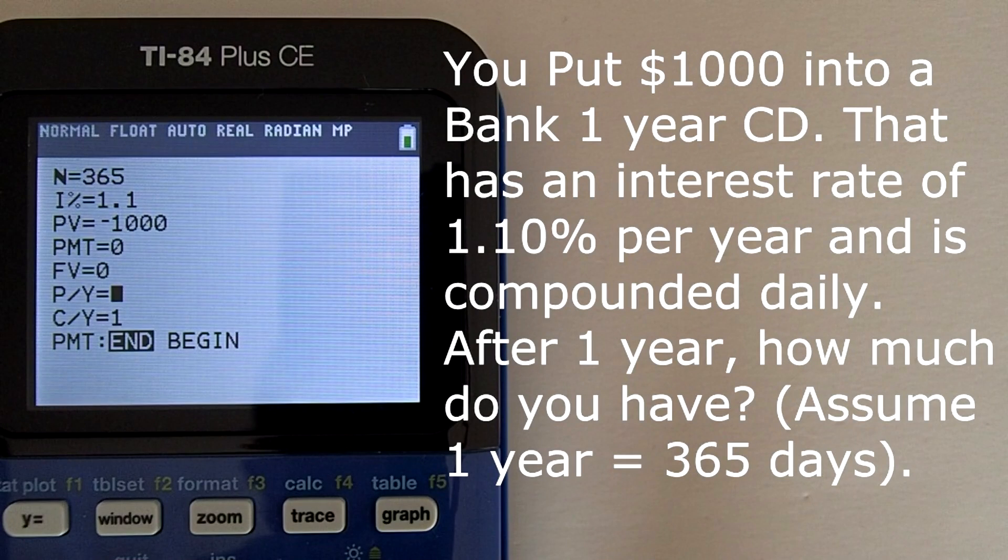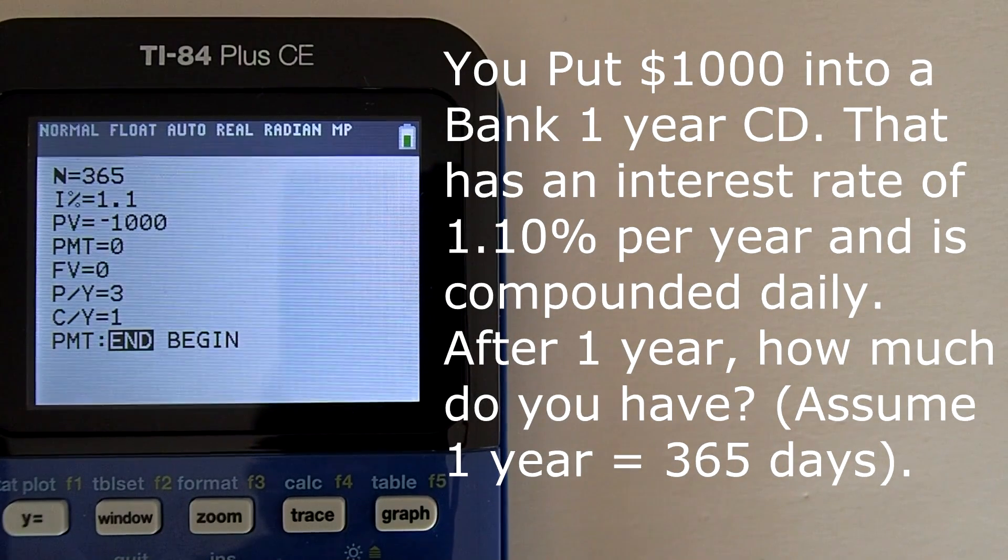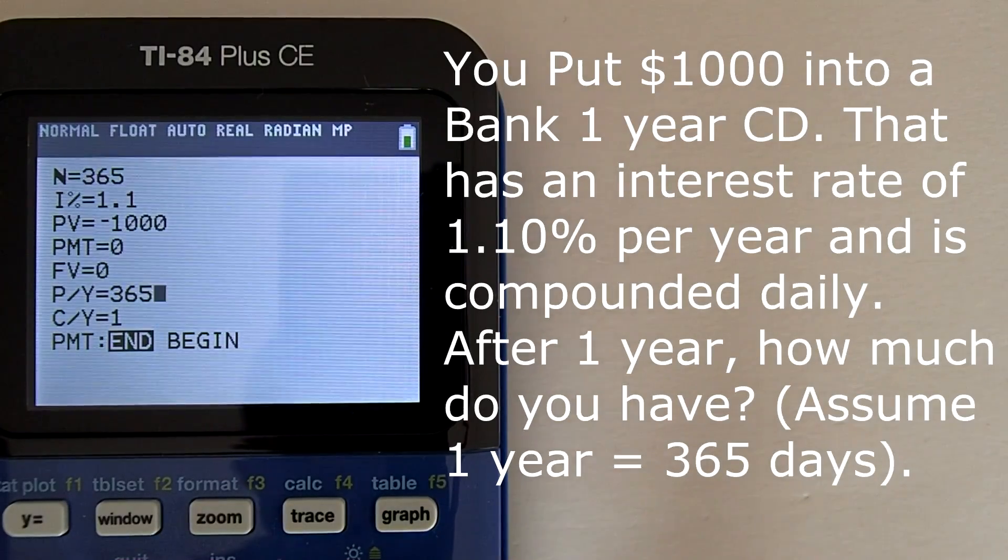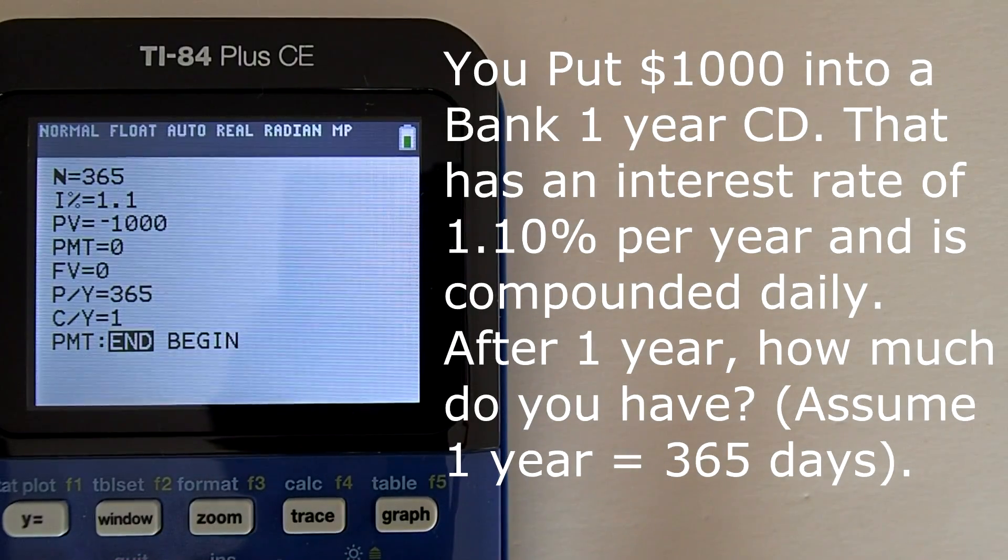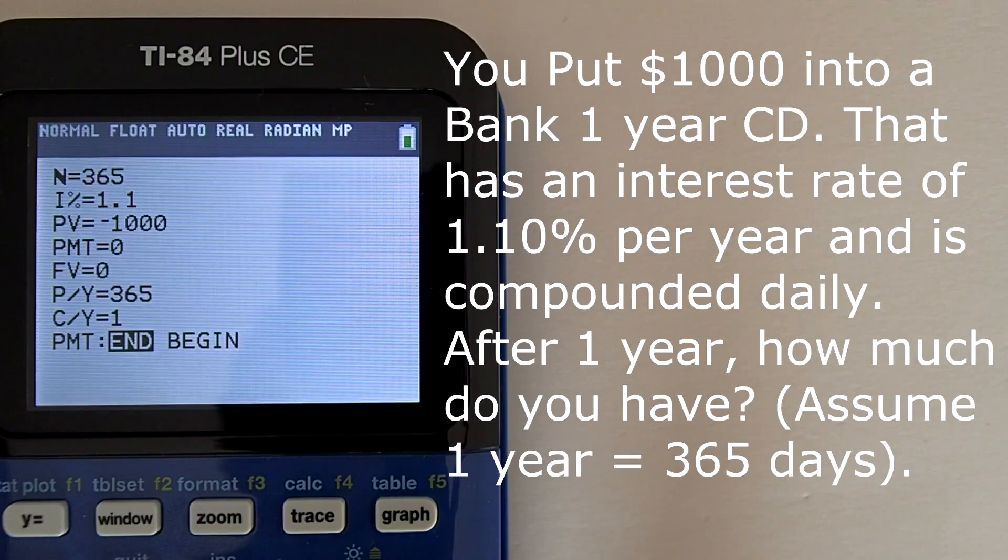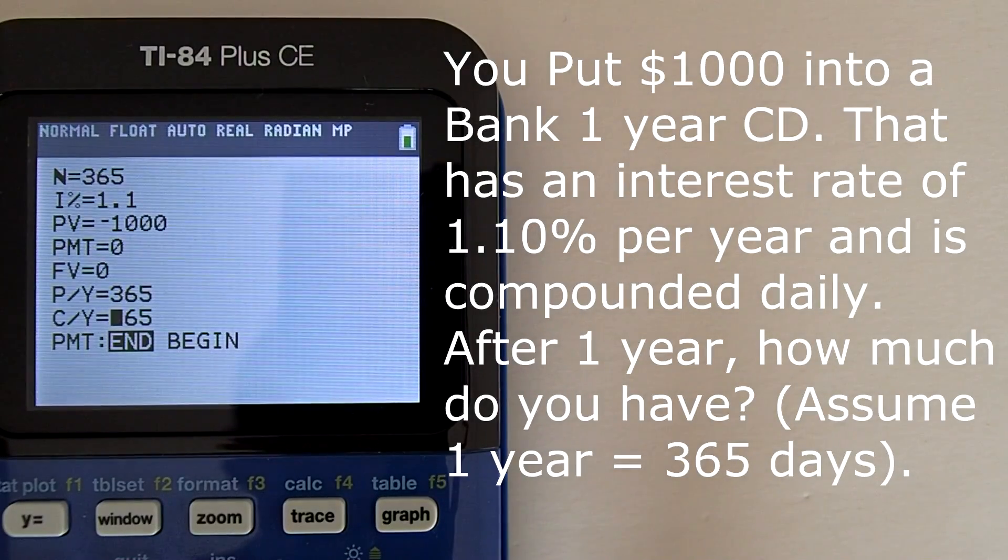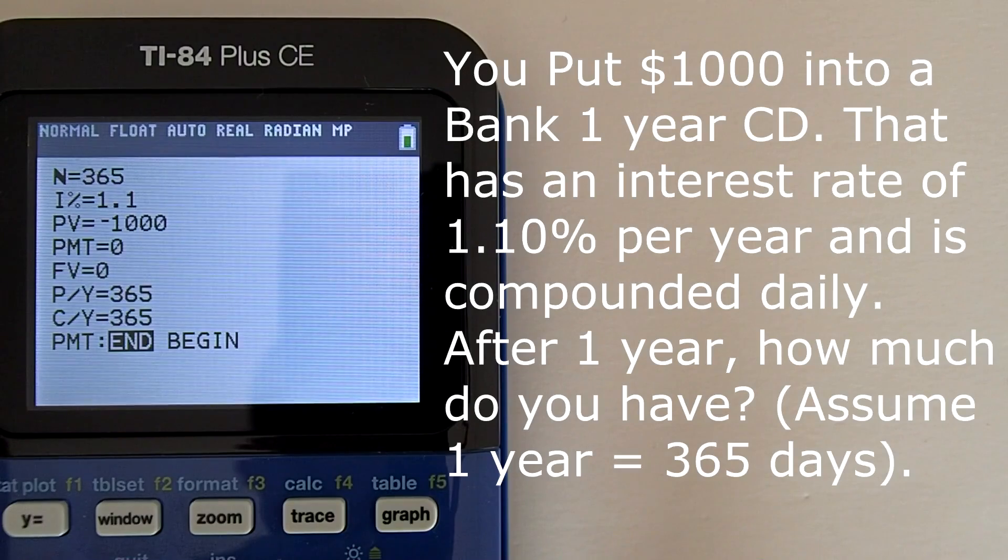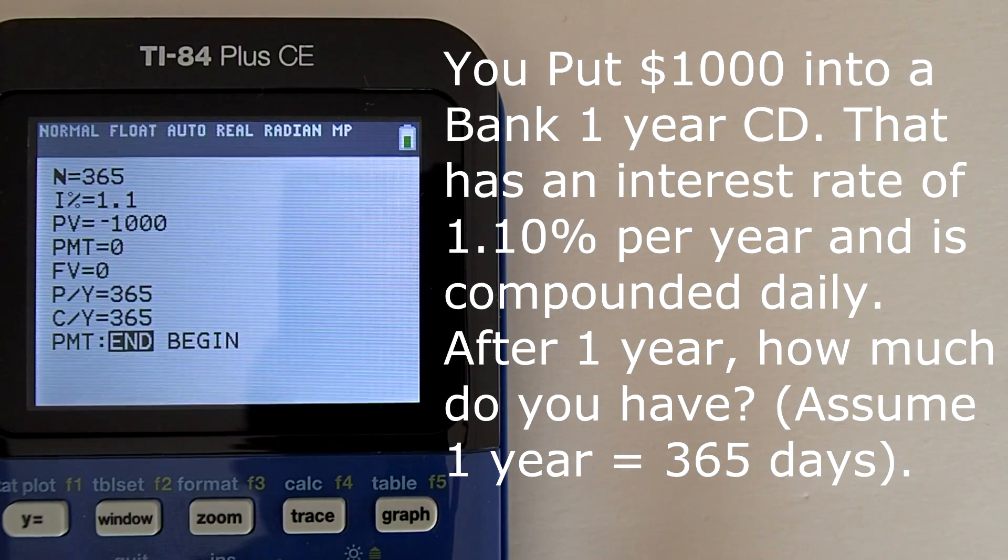The next two variables, payments per year and compoundings per year. This is going to be the same for both, which is 365. Our compoundings is daily, thus 365. In fact, after you enter 365 for payments per year, and go down to compoundings per year, the calculator will automatically fill in 365 for C/Y.